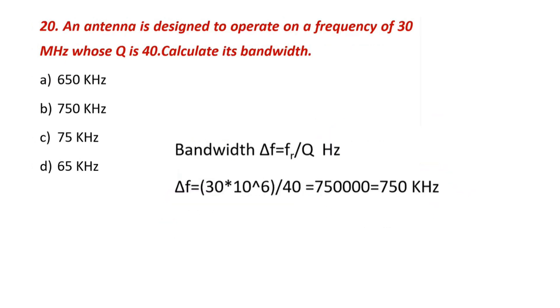An antenna designed to operate at a frequency of 30 MHz with a Q-factor of 40. Bandwidth = frequency / Q-factor. We have the theory for this calculation.